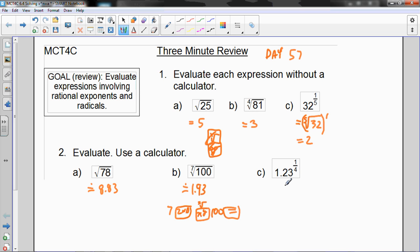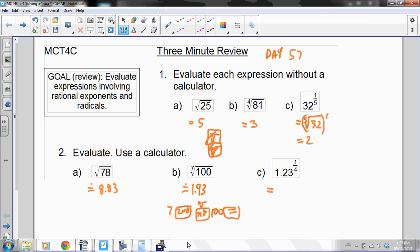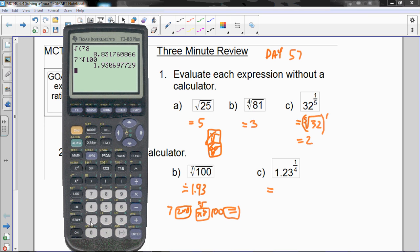This one's easier to put in either calculator, because this one is just 1.23 to the exponent 1 quarter. The only thing you've got to be careful about is to get your exponent in brackets. Get it in brackets. If you leave the brackets out, it's going to mess up on you. So put them in brackets.